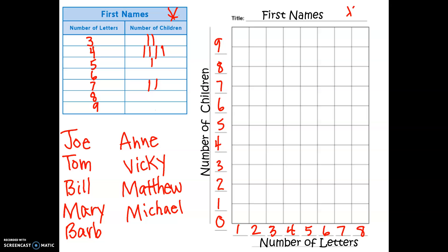So how many children had 3 letters in their name? 2. So I would go like this. How many had 4 letters in their name? 4 children did. So I'll go all the way up to the 4. How many had 5? Just 1. How many of my brothers or sisters had 6 letters? None. How many had 7 letters? 2 did.